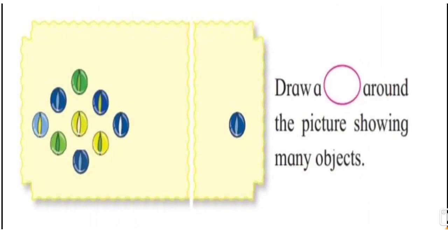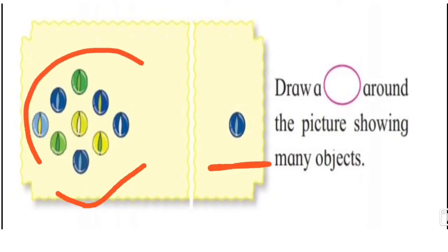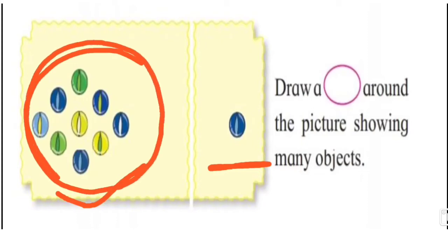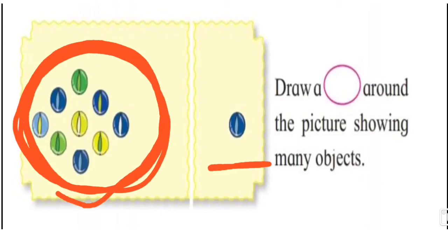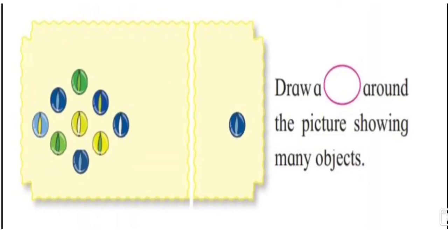See the next picture of your textbook. What is this? This is the picture of marbles. Do you play marbles? Very good! What we have to do: draw a circle around the picture showing many objects. In this picture, how many marbles are here? One marble. In this picture, how many marbles are here? There are many marbles. We have to circle the many objects — these marbles are many, so we will circle it. You also circle in your textbook. Very good, very nice!